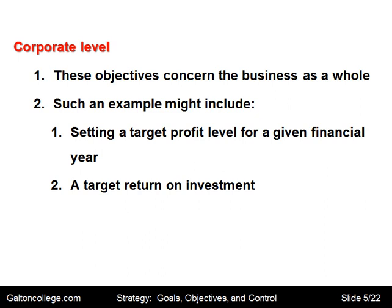At the corporate level, these objectives concern the business as a whole — all of the business. An example might include setting a target profit level for a given financial year. That applies to the whole business, and every part will be involved in trying to bring in that profit level. Or it could be setting a target return on investment — again, all of the various functions of the business will try to contribute towards achieving that target.